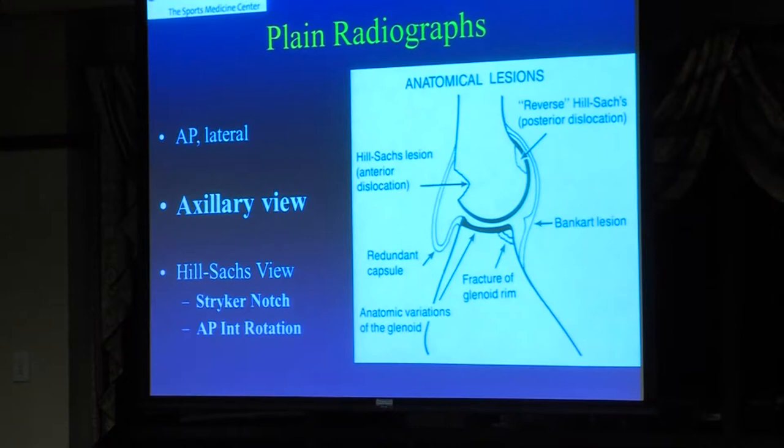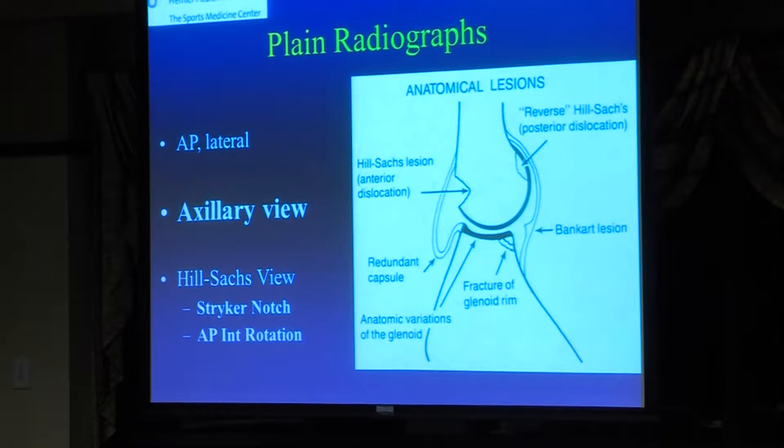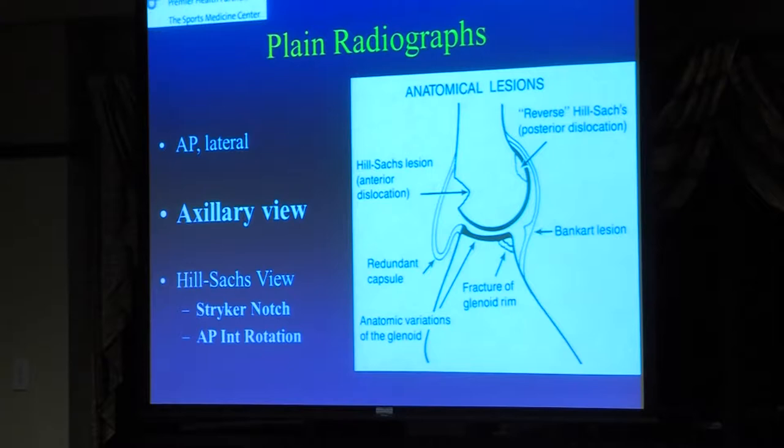The classic injury with a dislocation, typically in a younger person, is a Bankart tear — where the labrum anteriorly gets pulled off the glenoid. Other things that can happen include the Hill-Sachs lesion, a reverse Hill-Sachs if it goes out the back, and bone fractures on the glenoid. This is basically what you're looking at on post-reduction axillary lateral x-rays.